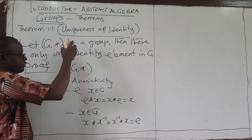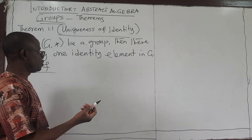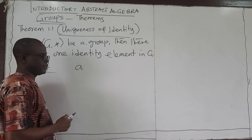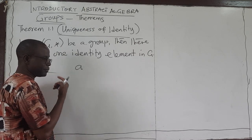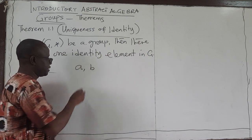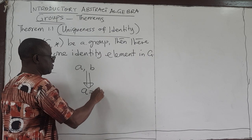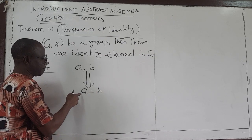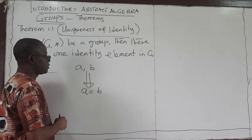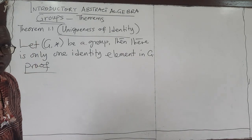That is basically what we want to prove. To prove uniqueness in general in mathematics, what you do is suppose you want to show that an element A in G is unique. The most common way is to assume there are two of them — suppose A and B are both identity elements — and then use the conditions of the theorem to show that A is equal to B. If A equals B, then of course there is only one of them.